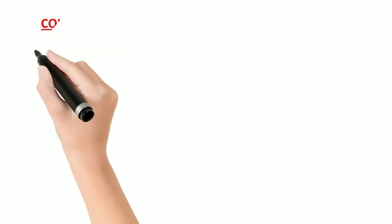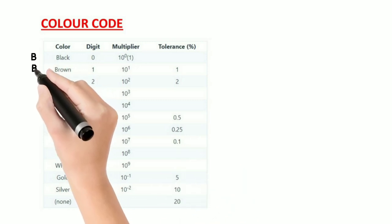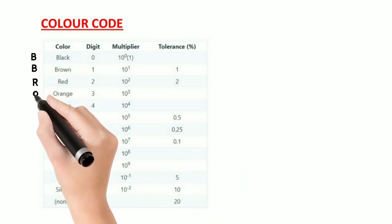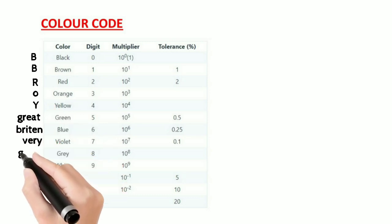We can measure the value of a resistance reading the color code on it. To understand the color code we have to watch this table. To memorize this table we can use the first letter of each color and make a code.